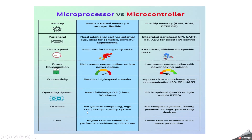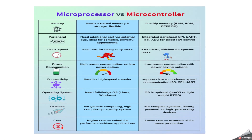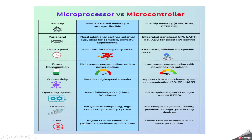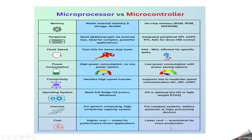In terms of use case, a microprocessor is designed for generic computing and high-complexity systems, while a microcontroller is suited for battery-powered applications due to its low power consumption. Cost-wise, a microprocessor is higher cost, while a microcontroller is a lower-cost option.